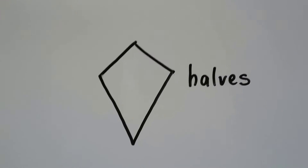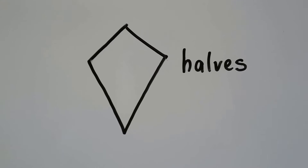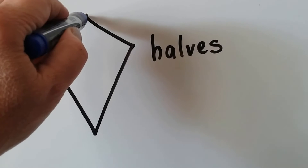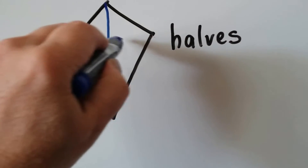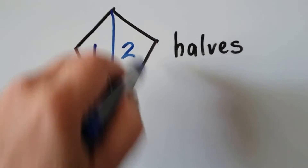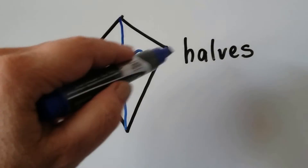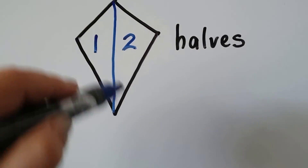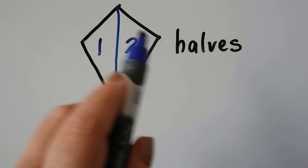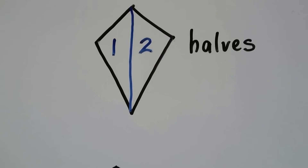What if we wanted to make halves? That means two equal parts. We could draw a line this way — that would be the line of symmetry — and we'd have one, two. We couldn't draw it the other way because the top part wouldn't be equal with the bottom part. We could draw it so that we have two equal parts.